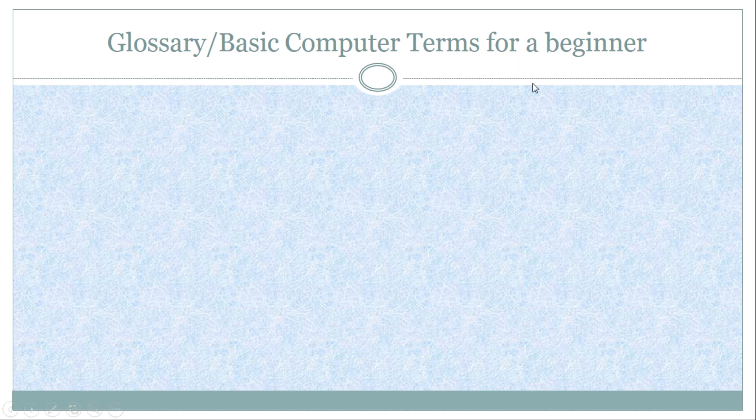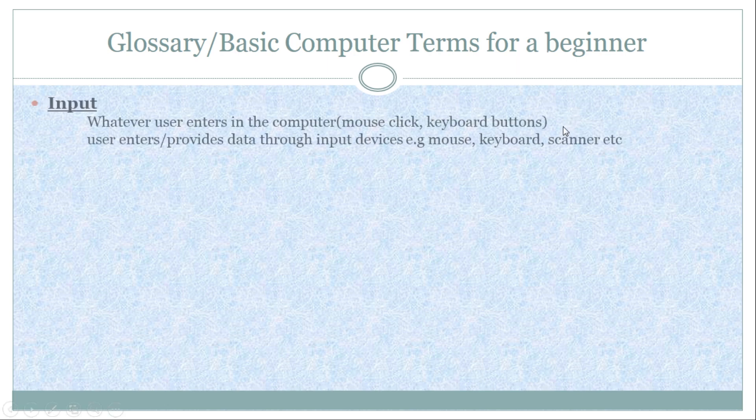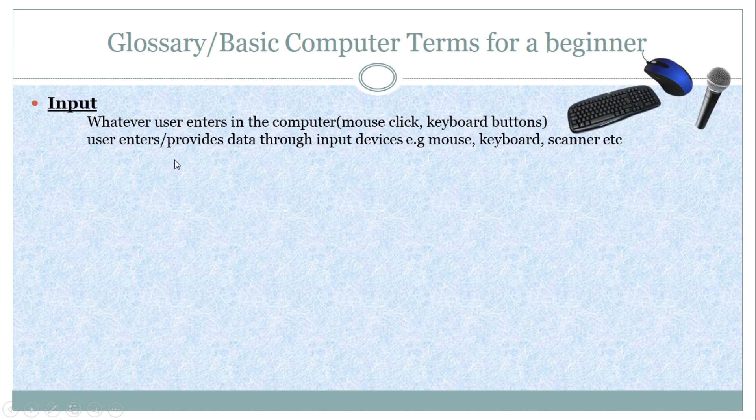Glossary or the basic terms for the beginner are as follows. First, we have the term input. Whatever user enters in the computer, mouse click or keyboard button, that is basically the input of the computer. User enters or provides data through input devices, for example, mouse, keyboard, mic, scanner, etc.